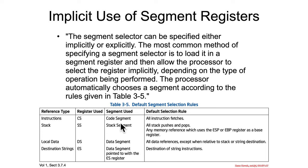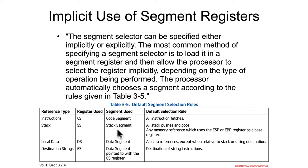If you're doing some sort of code, like instruction fetches, implicitly the processor is always using the code segment. If you're doing any sort of pushing and popping from the stack, or if you're using EBP or ESP, then it's implicitly using the stack segment register.